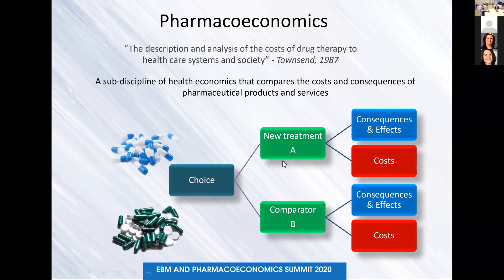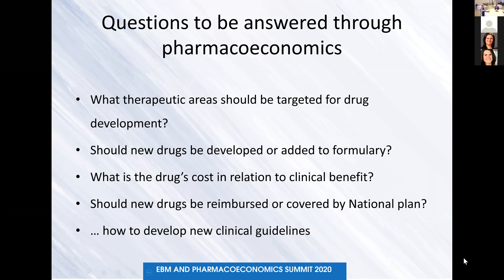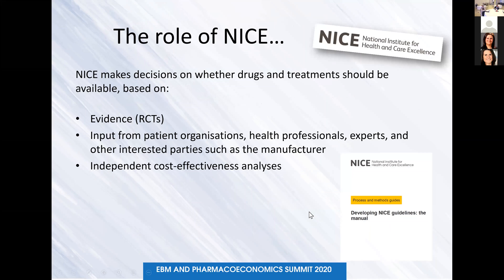Every time we need to choose between a new intervention and a comparator — which is the current standard — we need to compare them both in terms of their cost and their consequences and effects. Pharmacoeconomics can answer questions such as: what therapeutic areas should be targeted for drug development, should new drugs be added to formulary, and how can we use pharmacoeconomics to develop new clinical guidelines. The role of NICE is to give evidence in order to develop these new guidelines.